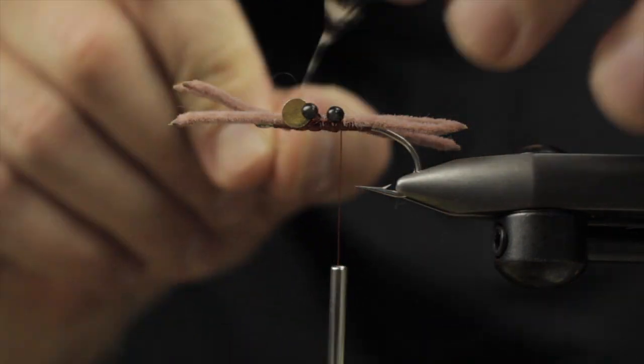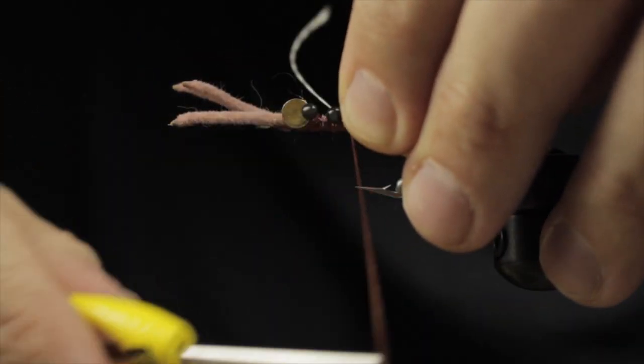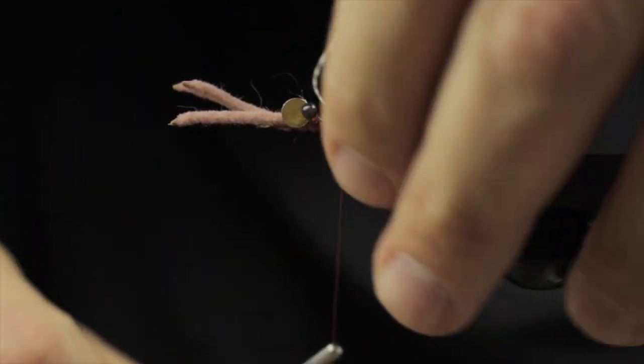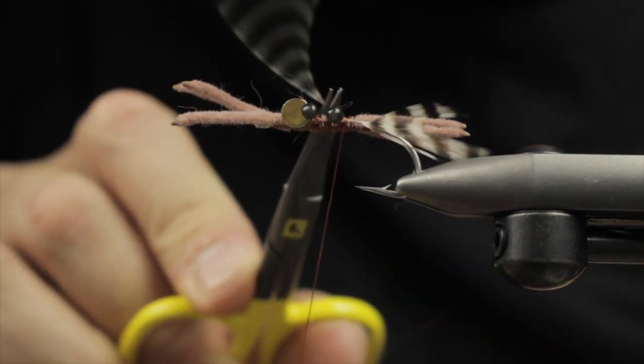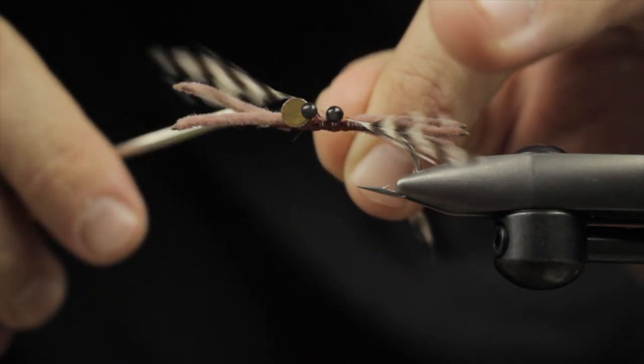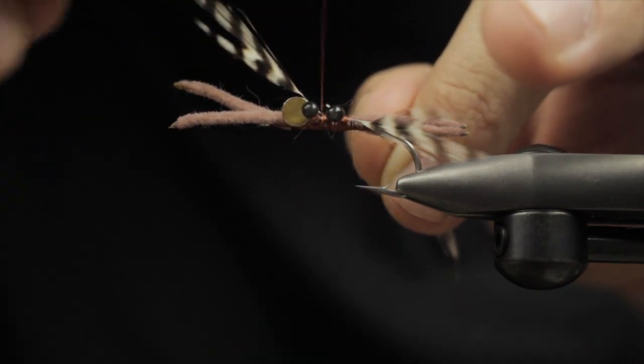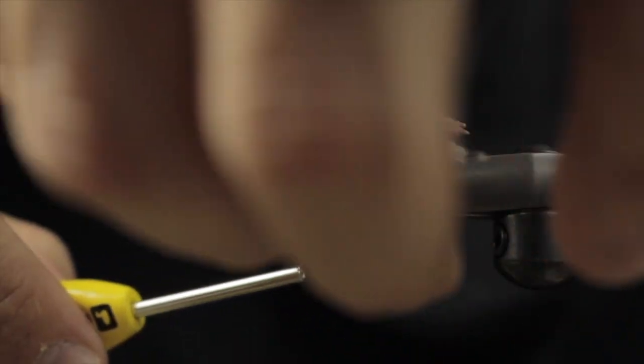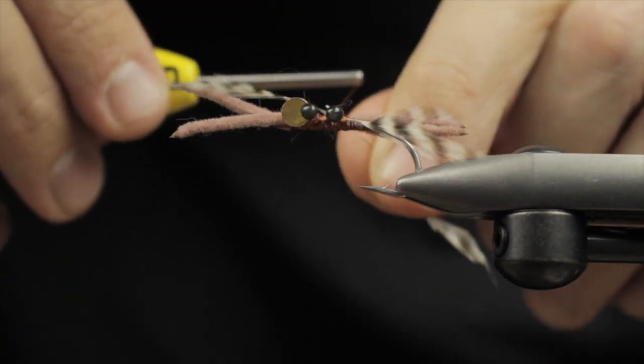Next up we have these grizzly tips and I've prepared them by cutting a V out of the front and stripping the excess off. I'm going to put those in right over the eyes and facing outwards. This will simulate a claw type look for this pattern and it does get a little bit tricky up front here because you're resting that in between the eye and the dumbbell eye.